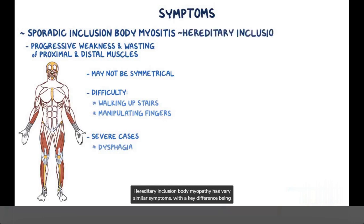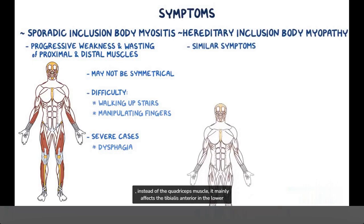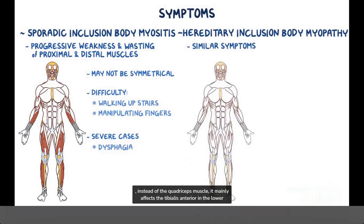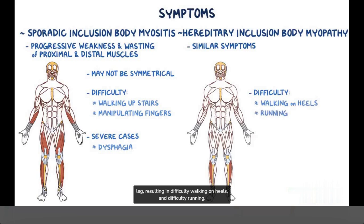Hereditary inclusion body myopathy has very similar symptoms, with the key difference being that instead of the quadriceps muscle, it mainly affects the tibialis anterior in the lower leg, resulting in difficulty walking on heels and difficulty running.